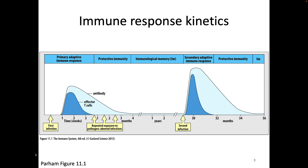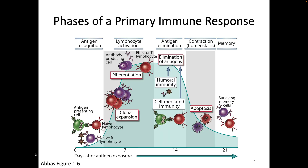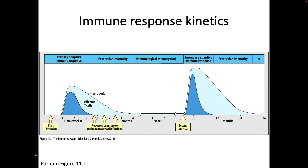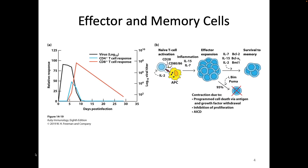Today we're talking about what happens beyond that. After the contraction phase, the number of remaining cells specific to our antigen of interest is higher than it was at the beginning. Previously perhaps we had one naive T cell or one naive B cell responding to our antigen. After this whole thing happens we have more — a larger number. We're not quite as low on our graph, so we have increased our number of cells. Those cells that are still present at this point in time are also different than they were before.